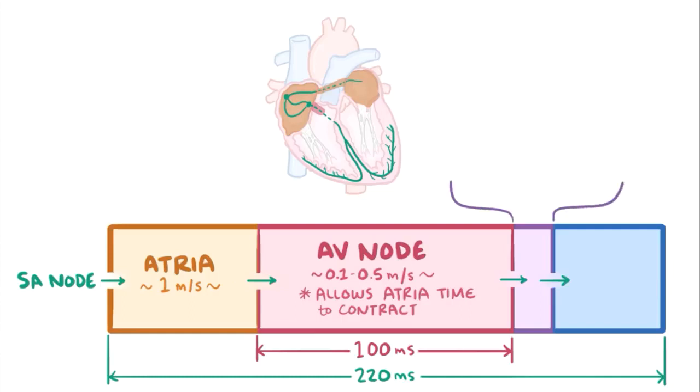After that, the conduction velocity in the bundle of His and Purkinje fibers of the ventricles goes back up to 2 to 4 meters per second, which is the fastest in the heart. That allows the ventricles to contract all at once in a really coordinated way, so that the blood gets pushed out rather than sloshing from one part of the ventricle to the other.